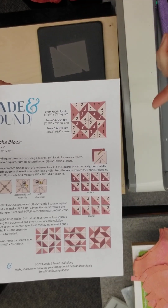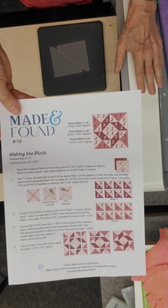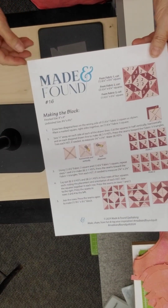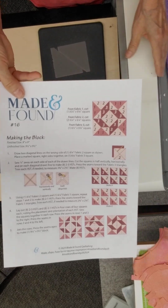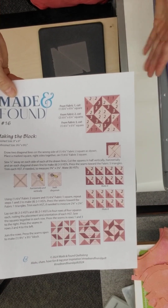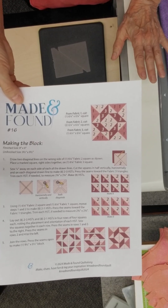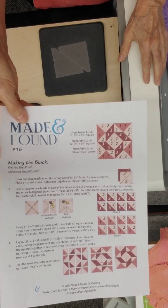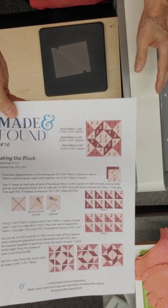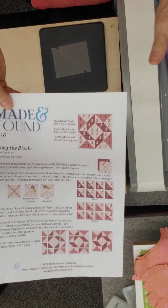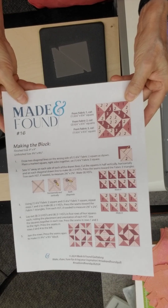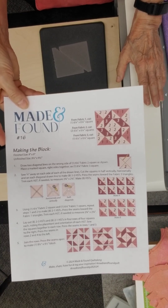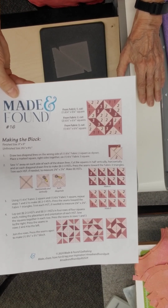This is a 9-inch finished block and the idea is to learn how to know what dies to use when you're looking at a rotary cutter pattern. All of these patterns were written for rotary cutting, but since a lot of us use AccuQuilt, I wanted to share with you how to know what die to use for patterns such as this. Since it is a 4-patch—meaning this block can be divided into four equal parts—we know that we use a 9-inch cube for the most part to cut out the 9-inch blocks.